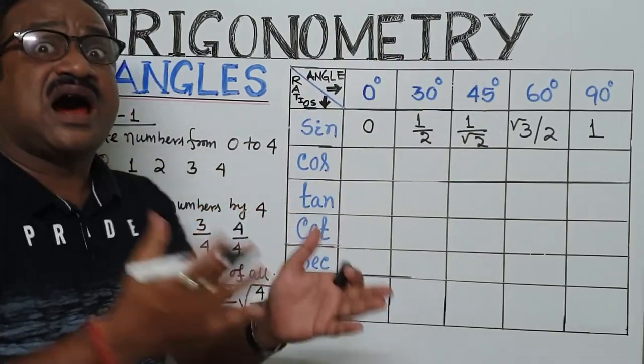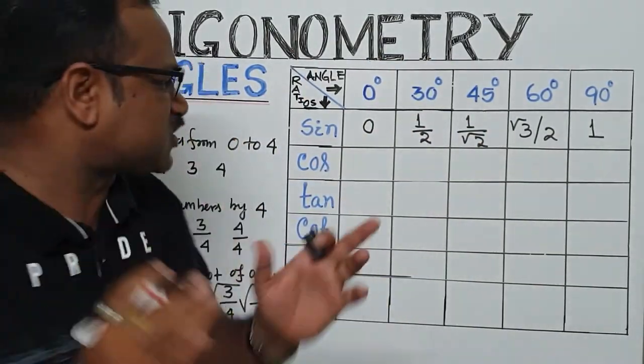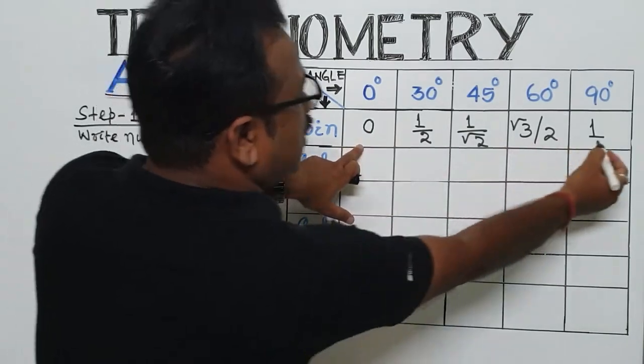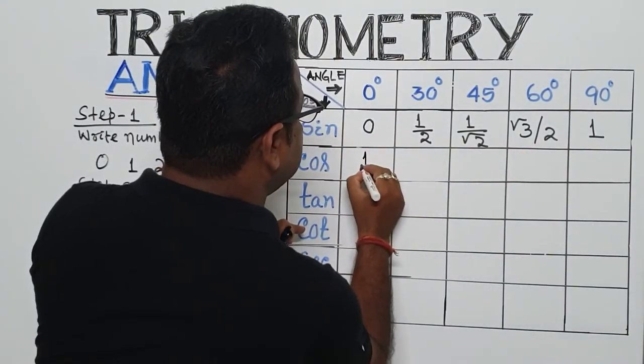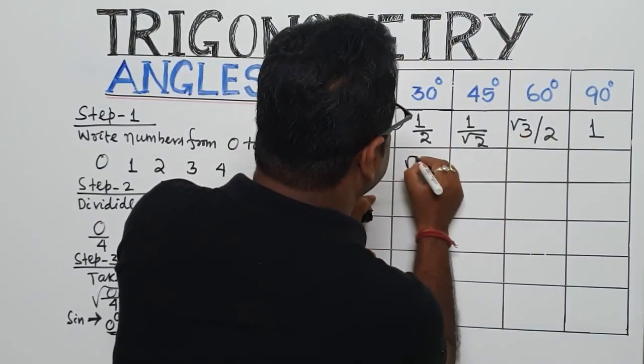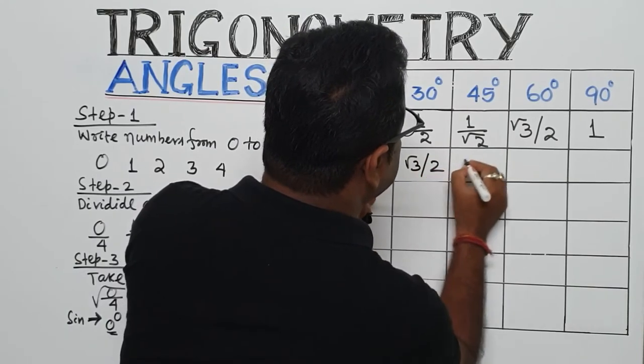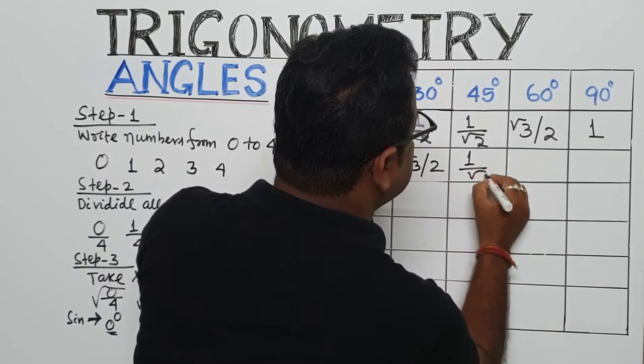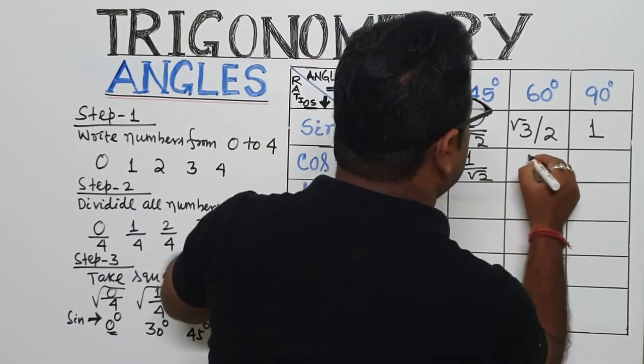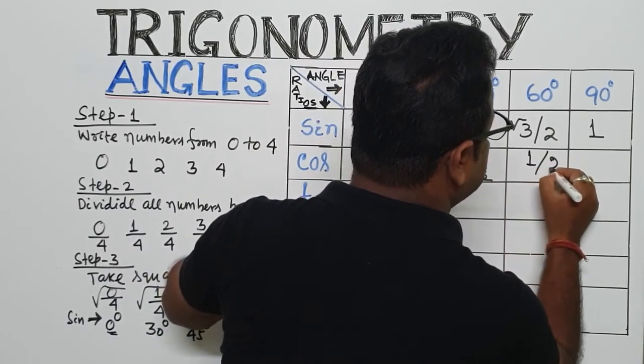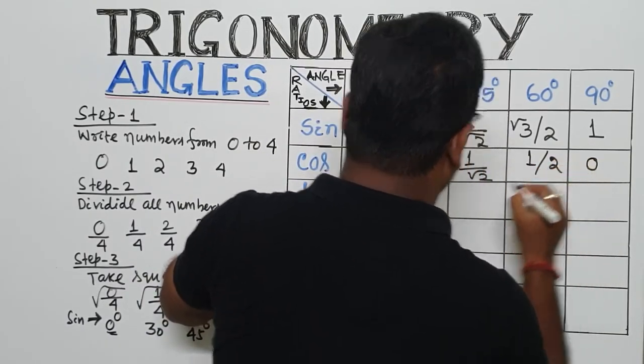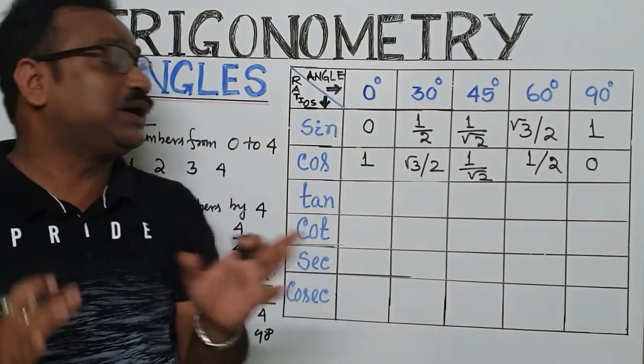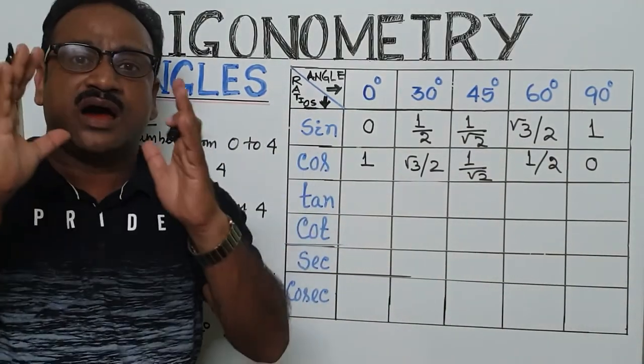we will write in the reverse order to get the angle of cos. So now, here 1, write here 1. Here, root 3 by 2. Here, 1 by root 2. Here, 1 by 2. Here, 0. So this way, very shortly, we can get the angle of the cos.